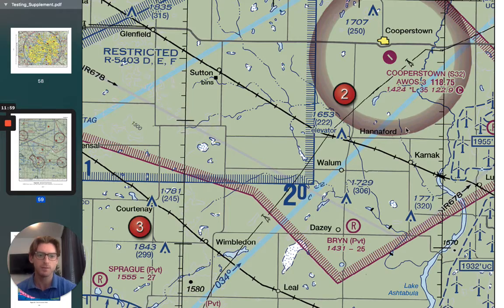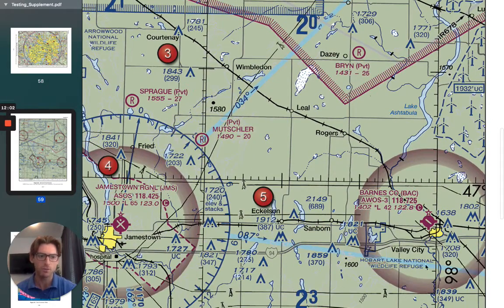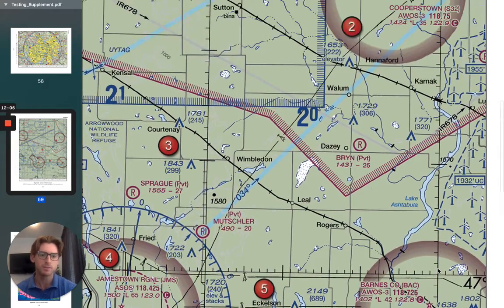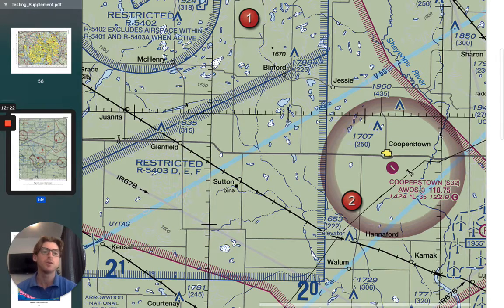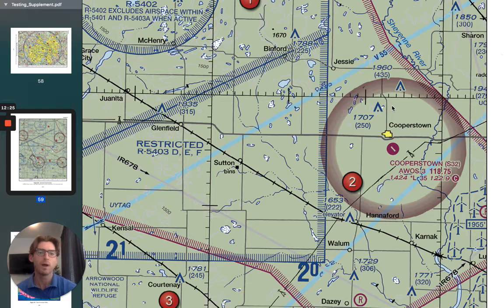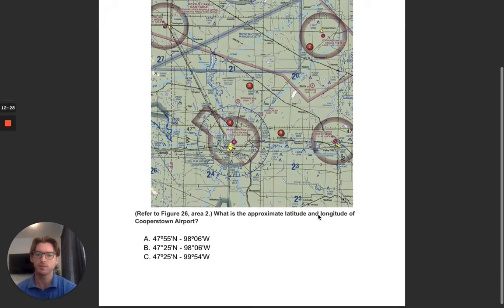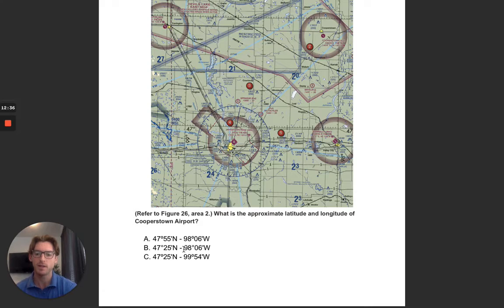So I'm going to say that is 47 degrees north, 25 minutes — so 47, 25. Now let's look for the longitude — we have 98 degrees west. I know this is 5 because it's slightly bigger, and this is 10. So counting: 5, 6, maybe 7 — we'll call that 98 degrees 6 minutes west. So let's see if that gets our answer. I said we have 47 degrees 25 minutes north, and 98 degrees 6 minutes west. So our answer here is B.